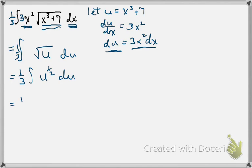So we have 1 third. Remember you increase the exponent by 1. So u to the 3 halves divide by the new exponent. So dividing by 3 halves is the same thing as multiplying by 2 thirds. And don't forget our plus c.